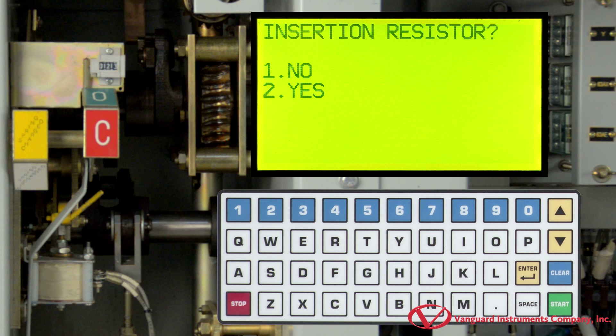On this screen, we are going to select whether there is an insertion resistor or not, and for this example, we will press 1 for no.